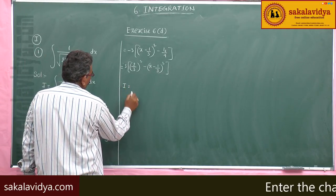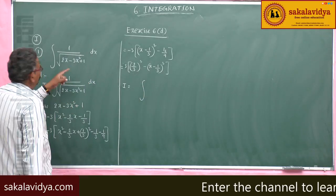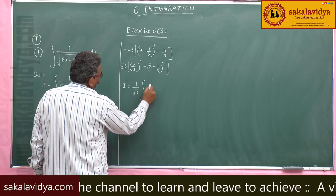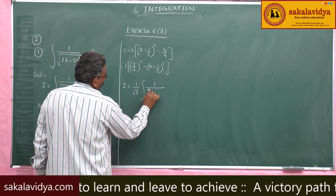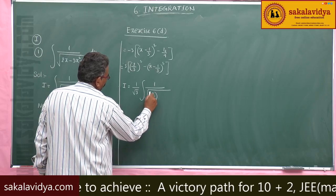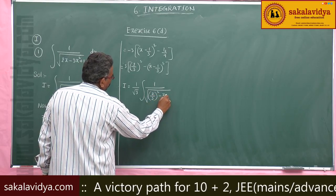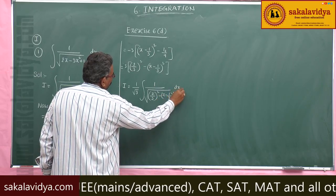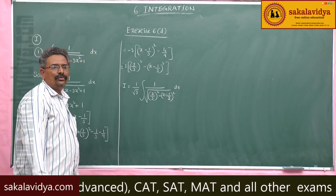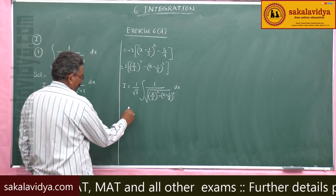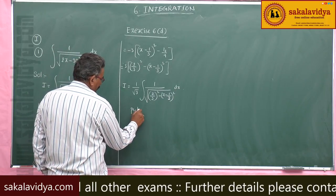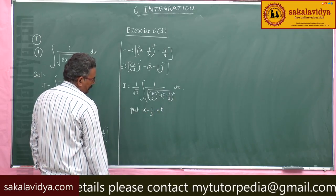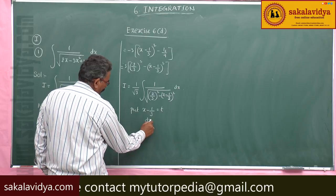So, I becomes integral of 1 by root of — taking 1/root 3 common — 1 by root of (2/3)² minus (x minus 1/3)² dx. To solve this, put x minus 1/3 equal to t; differentiating with respect to x, dx equals dt.